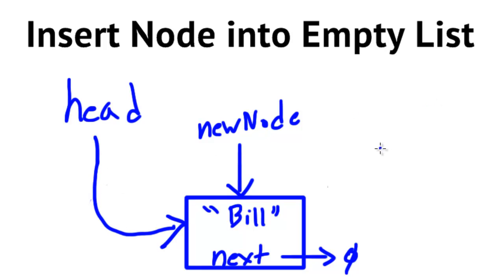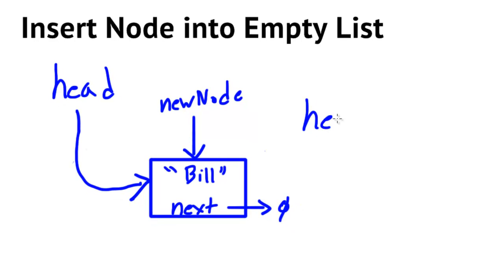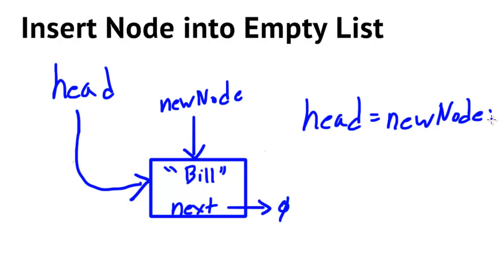Once we find out that head is pointing to null, the only thing we need to do is set head to point to the new node. The assignment statement would be easy — we take our head pointer and set it to the address stored in our new node pointer. That's all that happens when we're dealing with an empty linked list.